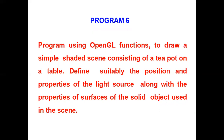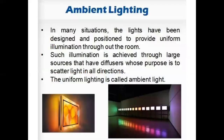In this lab program, we have to define the position and the properties of the light source. As we have studied in our OpenGL illumination models, we can use different types of light sources like ambient source, diffuse light source, and also specular reflection light source. There are basically three types of light sources.